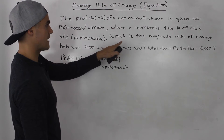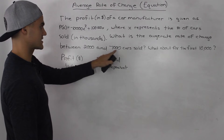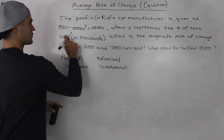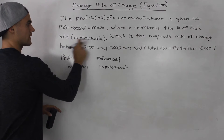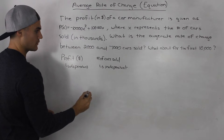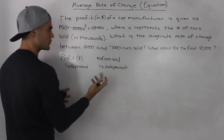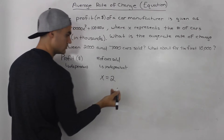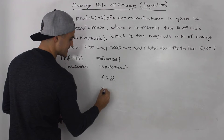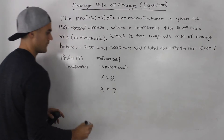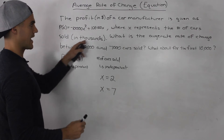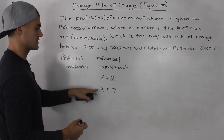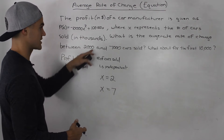What is the average rate of change between 2,000 and 7,000 cars? Since x represents the number of cars sold in thousands, we're looking for the average rate of change between x = 2 and x = 7. An x value of 2 represents 2,000 and an x value of 7 represents 7,000.